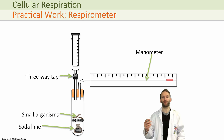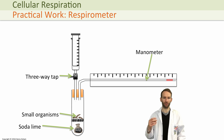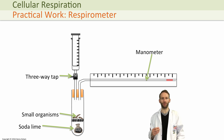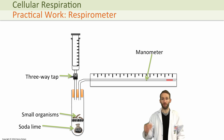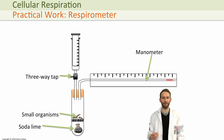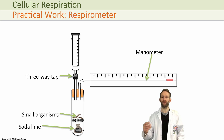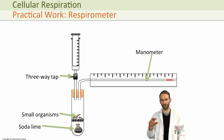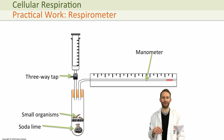When setting up a respirometer, you've got to bear in mind the control variables, keeping them constant, and repeat the experiment to improve reliability. It's also important to consider the ethical implications of using animals in an experiment like this.